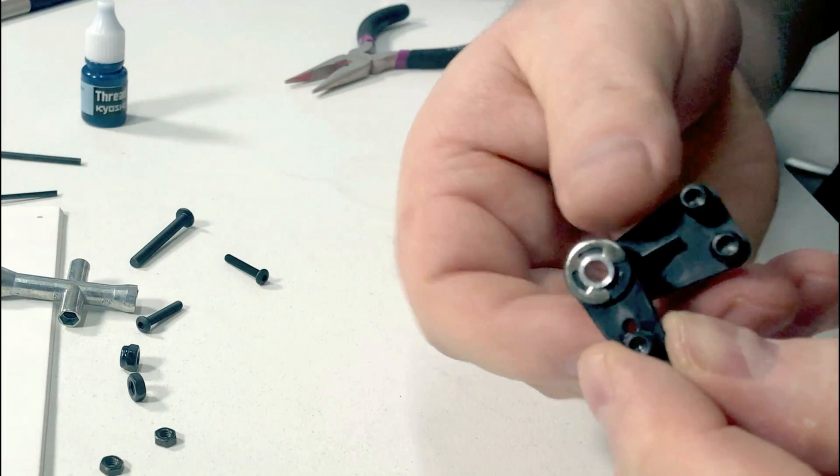And there we go, that's the front end together. And one thing you need to look at is the tie rods. Measure that they're only 3.5mm off the chassis rail there.